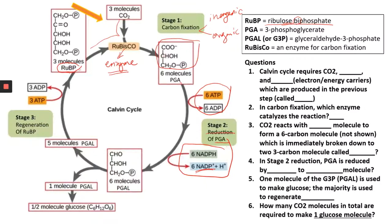PGA is converted to PGAL, also called G3P. Then PGAL splits: one molecule goes on to become glucose, and the majority — five molecules of PGAL — go back into the cycle and are used to regenerate ribulose bisphosphate, so you have the raw material to fix more carbon in the next cycle.